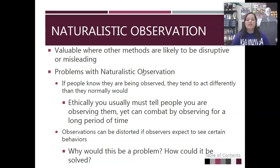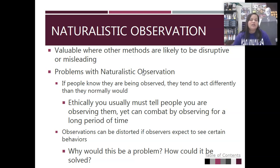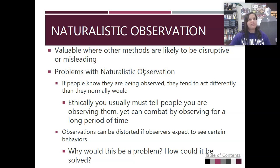The observations can also be distorted if observers expect to see certain behaviors. For example, if I'm looking for how many times you smiled, I might think, 'Oh, I think that was a smile,' but maybe it wasn't really. And that can affect the results. So we might have to accurately define what would constitute a smile.